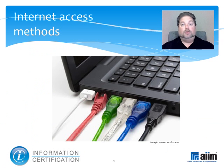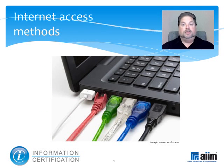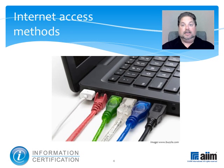For the most part, how most users access the internet is a function of first availability and then cost. Here are some of the most common methods. Dial-up uses a modem and standard telephone line, which can be used either for calls or for internet access, but not both at the same time. The connection is made as needed and the maximum speed does not exceed 56 kilobytes per second, or kbps.